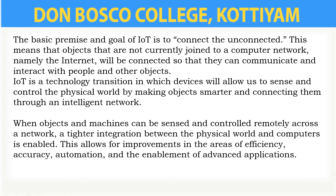First we can check what is IoT. IoT means Internet of Things. Internet of Things is a network of physical objects or people, called 'things,' that are embedded with software, electronics, network, and sensors that allow these objects to collect and exchange data. The thing in IoT can be any device with any kind of built-in sensors with the ability to collect and transfer data over a network without manual intervention.